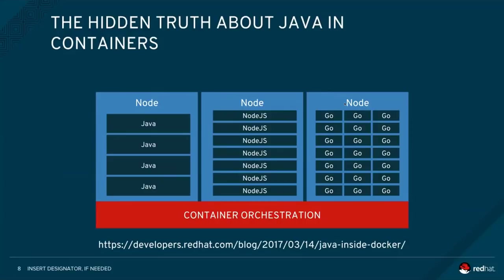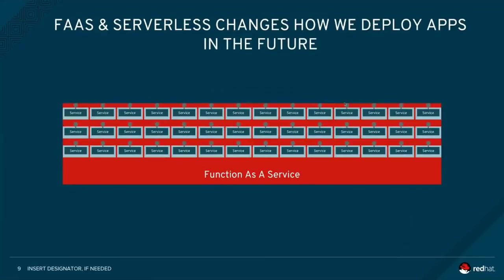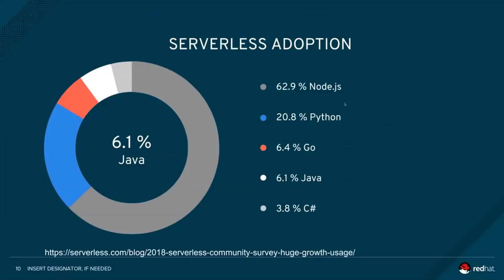In a container orchestration cluster on a single node, you might only be able to fit like four Java processes or containers. But if you're using Node.js, you could fit more. Moving to function-as-a-service or serverless architecture is going to increase the number of deployments, potentially hundreds of nodes, geographically distributed. Today, the serverless adoption around Java is not very high — it's about 6.1% — and languages like Node, Python, or even Go surpass Java there.